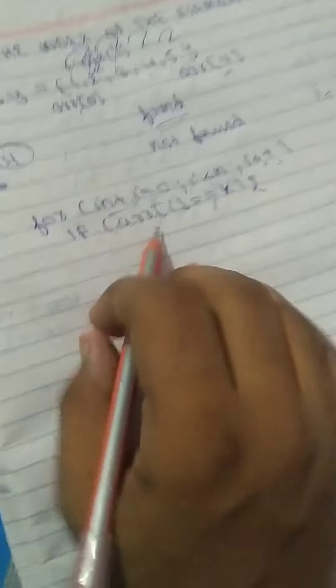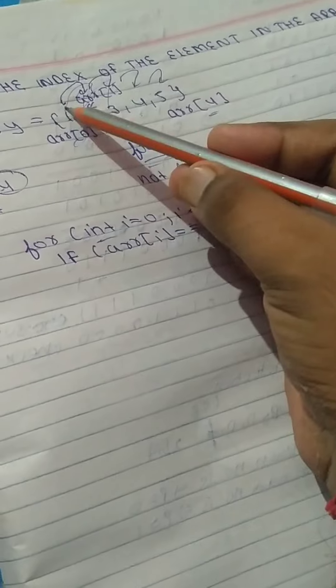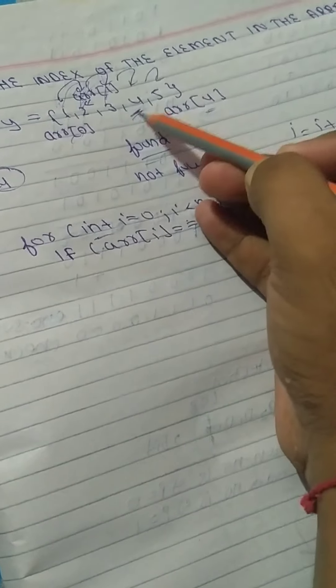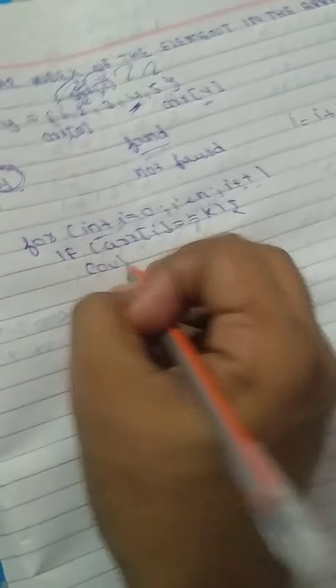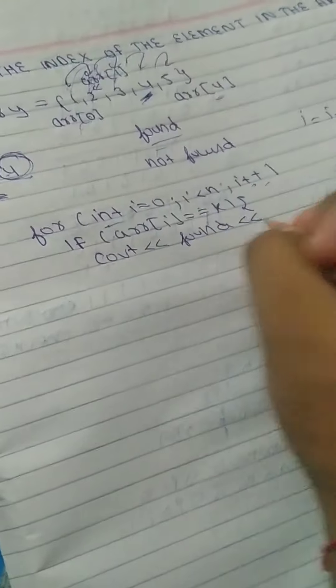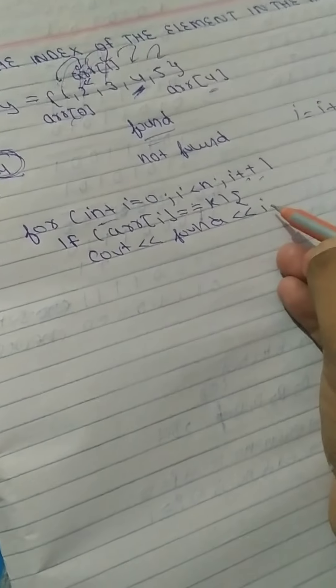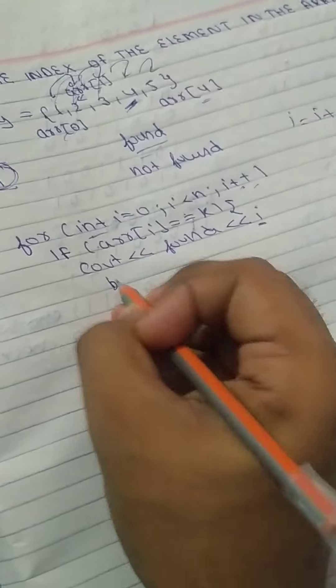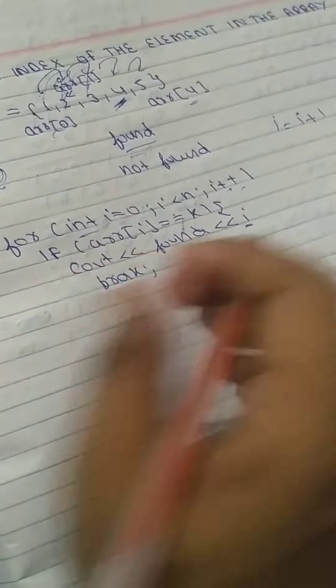After the for loop, you apply the condition: if array[i] is equal to k, then print 'found' and print i, which gives you the index of the element. You will see this in the code as well. After this, apply the break condition so nothing else executes and you go directly to return 0.